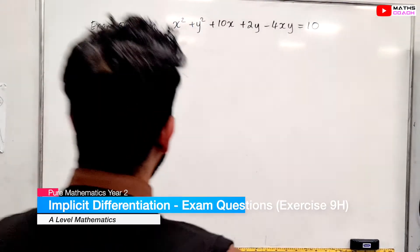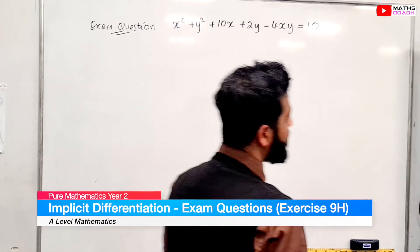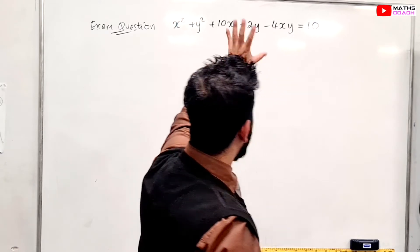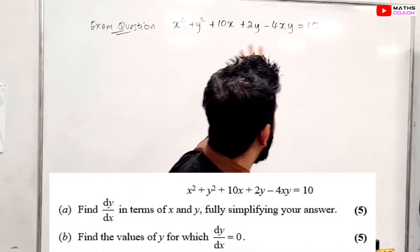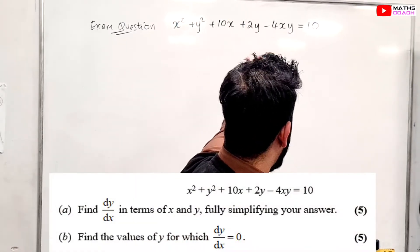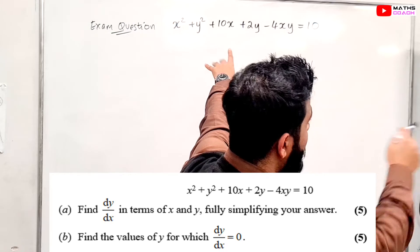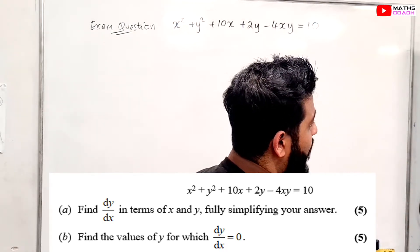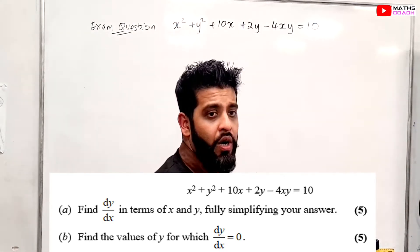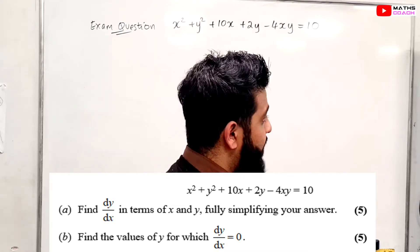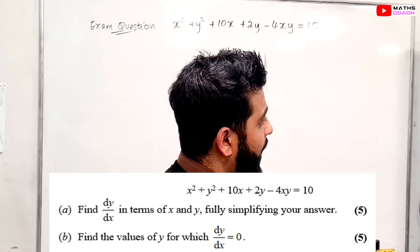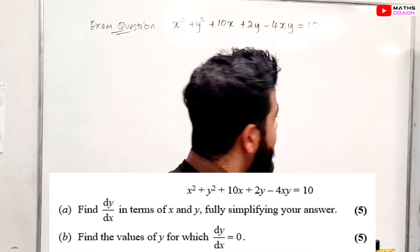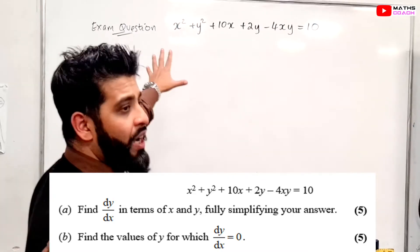Let's have a look at this exam question. It's a very typical question carrying around 10 marks, and there are two parts: find dy/dx in terms of x and y, fully simplifying your answer, and part b, find the values of y for which dy/dx is equal to zero.